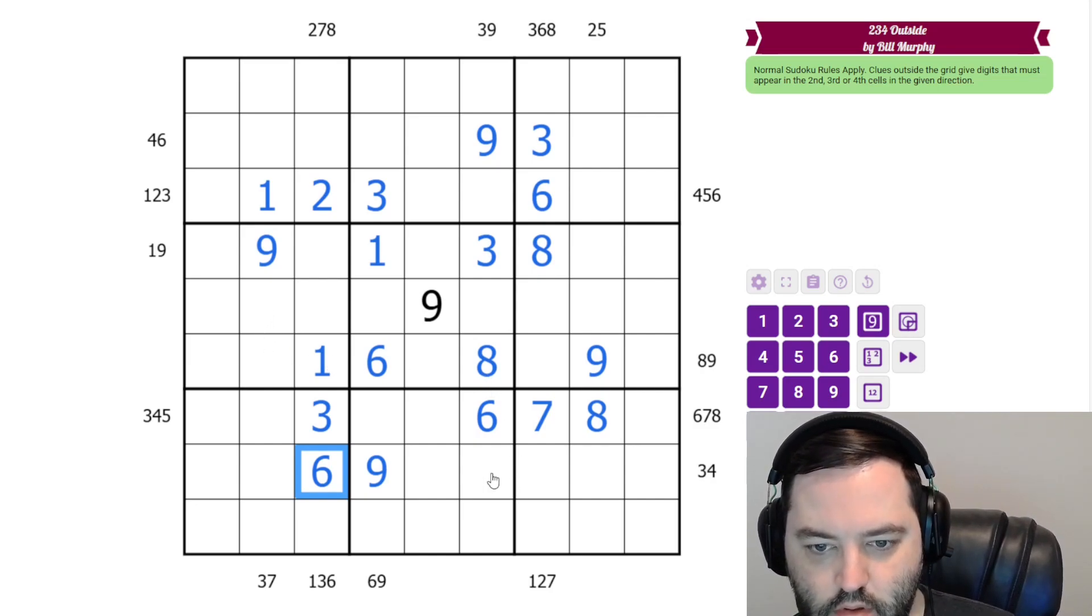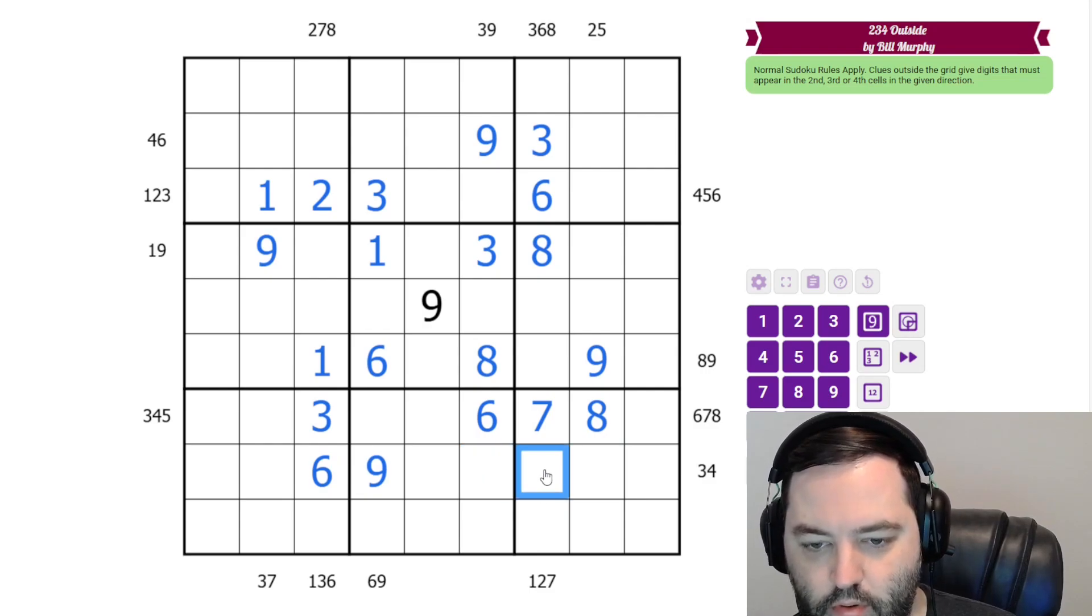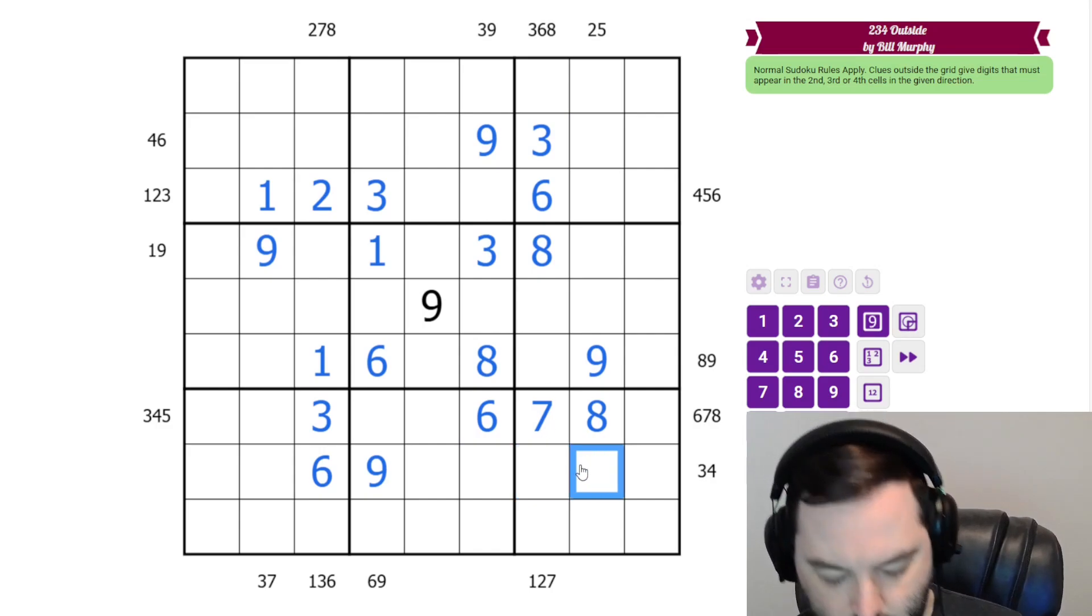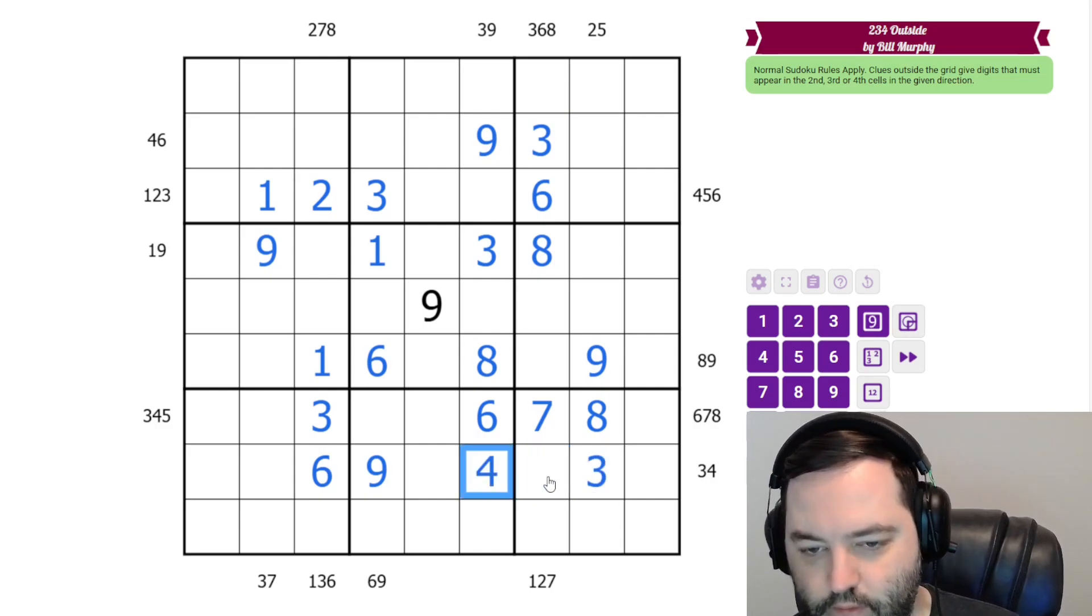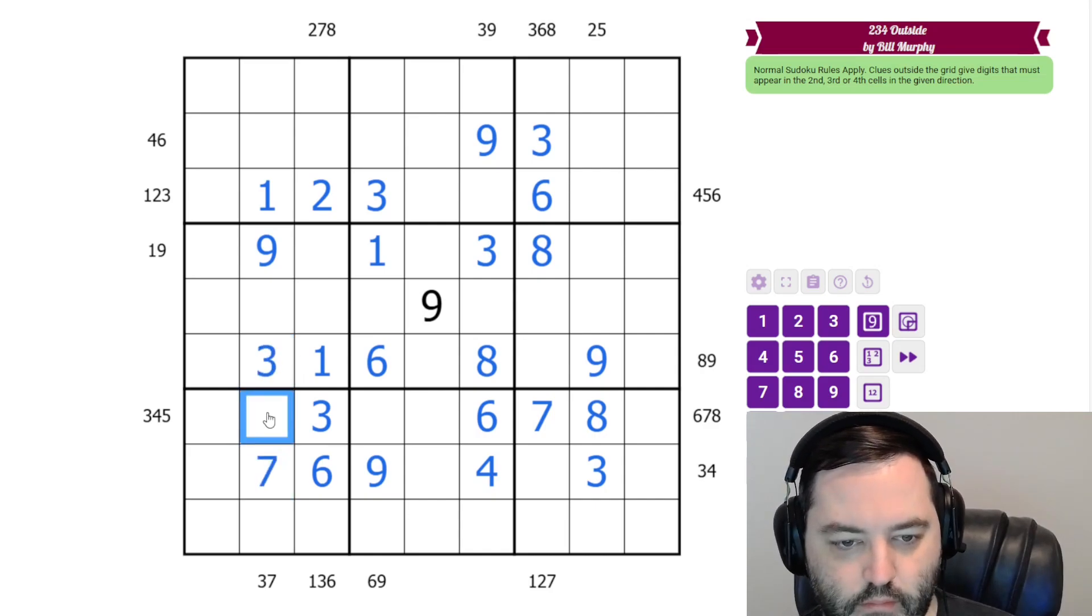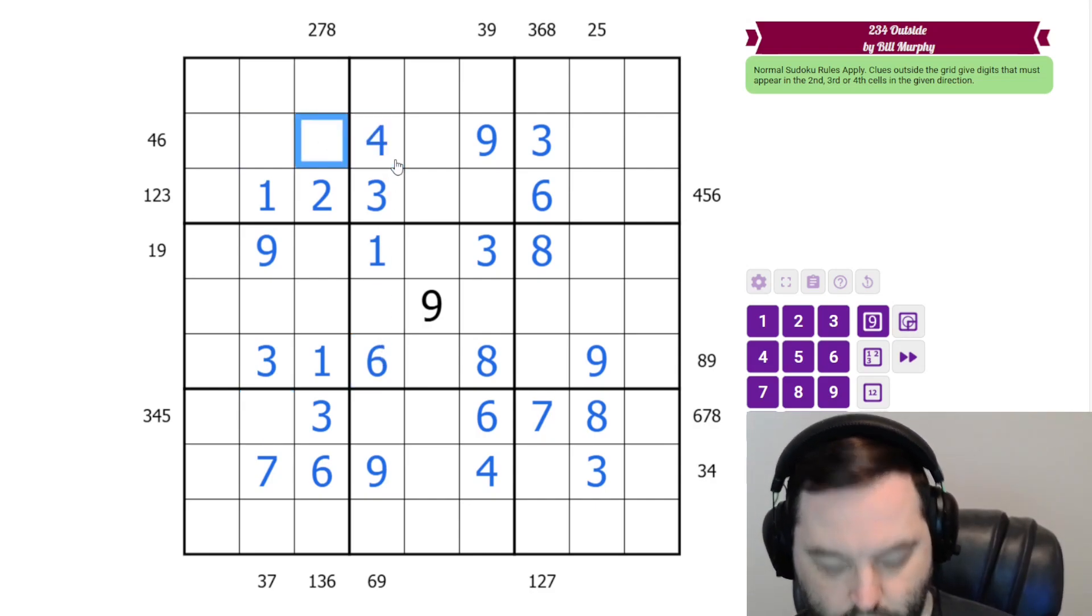Nice symmetry. All right, some of the other clues. The 3, 4 here, this can't be a 3 now. And remember, this can't be a 3 anyway because of this, but these are 1, 2. So this has to be our 3, which means this is our 4 because this is 1 or 2. The 3, 7 here, 3 can't go in box 7, so that's our 3. That's our 7 because this is 4 or 5. The 4 and the 6 now are resolved by the 6. So this is 4, 6.